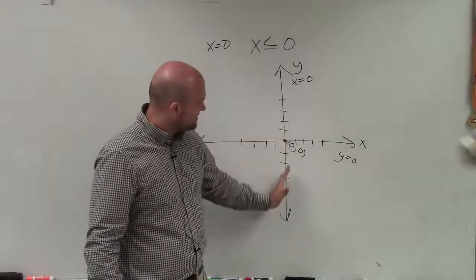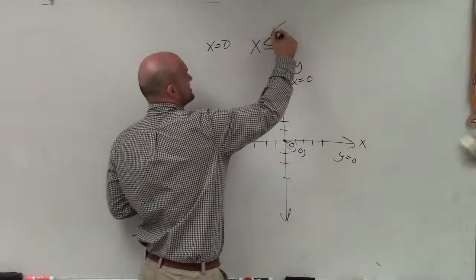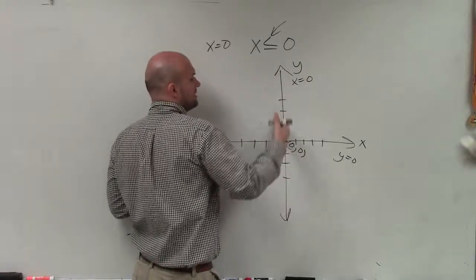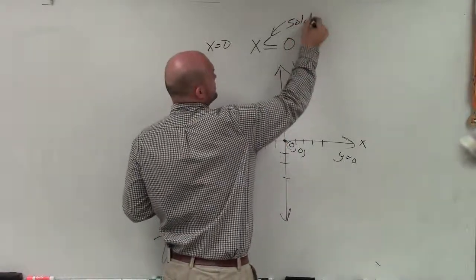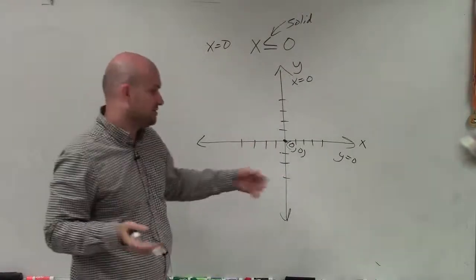Well, is my line going to be solid or dashed? Because it is just the y-axis. And since this is less than or equal to, that means the y-axis, my equation or my inequality, is part of my line. If it was just less than and not less than or equal to, then we'd actually have to dash it because it wouldn't be part of the solution.